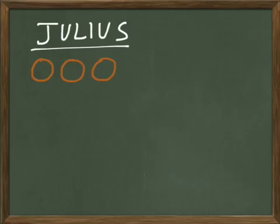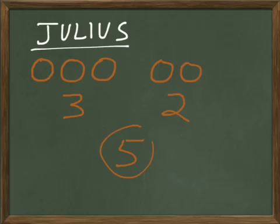And he finds 2 more cents. So he starts out with 3 and then he finds 2 more. How many cents does Julius have altogether? 3 and 2 are 5. That's an easy one.